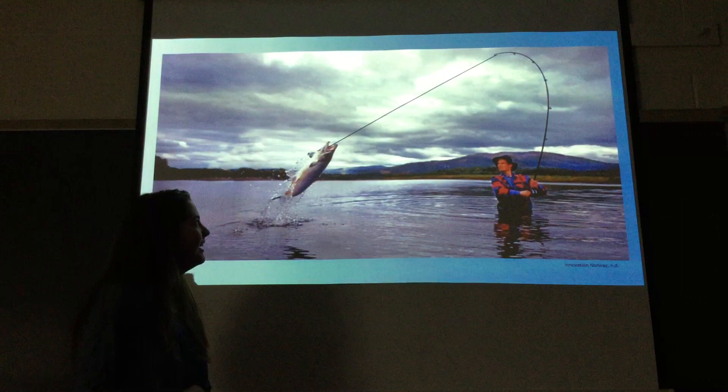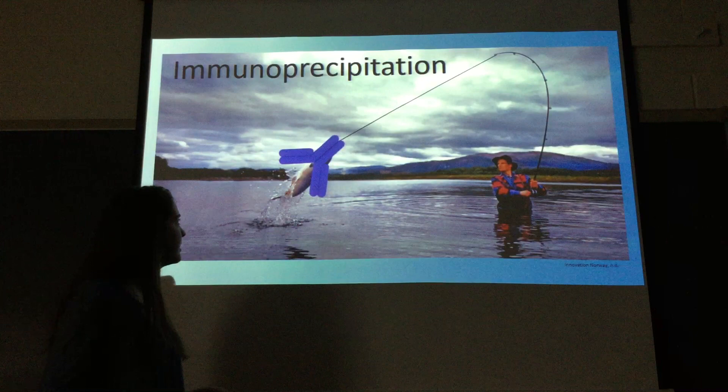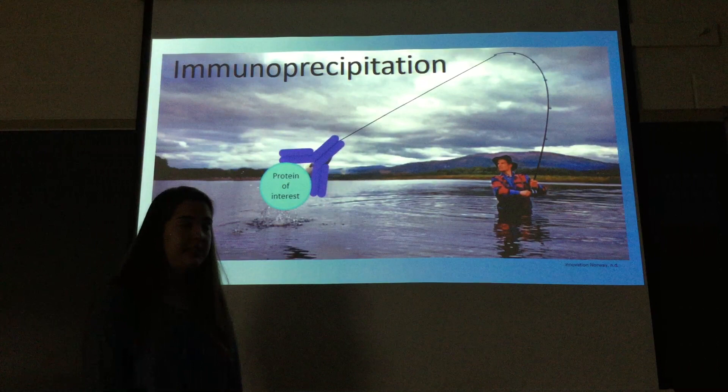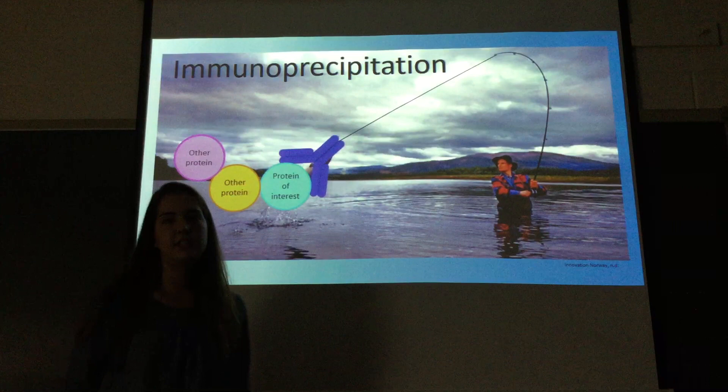The first type of test I did was called an immunoprecipitation, and the best comparison is fishing. In an immunoprecipitation experiment, you use an antibody specific for a tag on your protein of interest. You put that antibody into your lysed cell sample, the antibody hooks the protein of interest, and once you precipitate that antibody out, you can determine what other proteins are bound to your protein of interest.